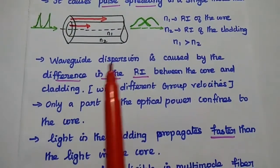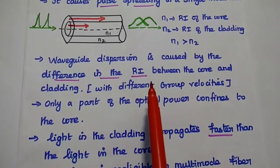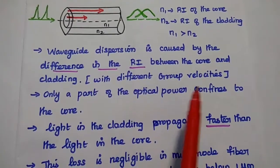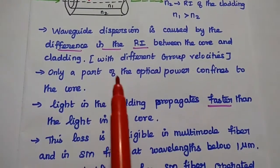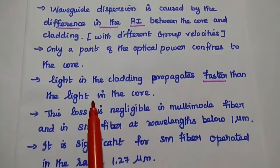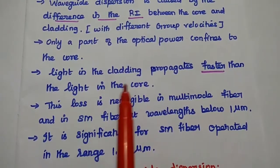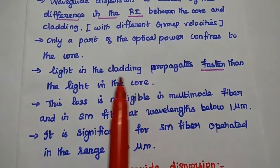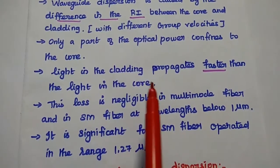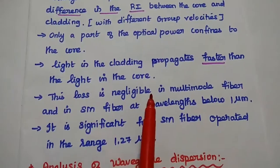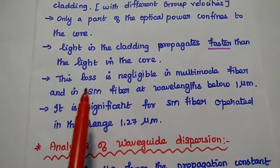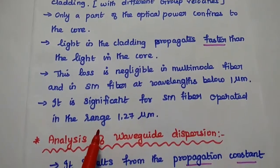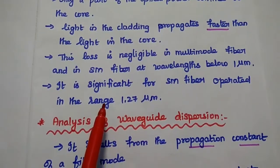Waveguide dispersion is caused by the difference in the refractive index between core and cladding with different group velocities. Only a part of the optical power is confined in the core; the remaining propagates through the cladding. Light in the cladding propagates faster than in the core, causing different group velocities or different group delay in the fiber cable. This effect is negligible in multi-mode fiber, but in single-mode fiber it is significant in the range of 1.27 micrometers.